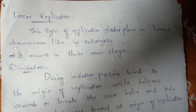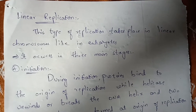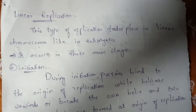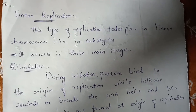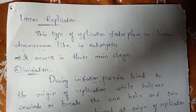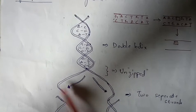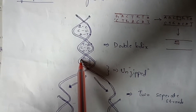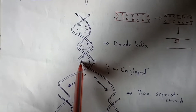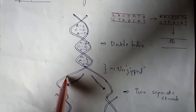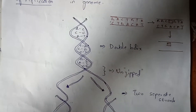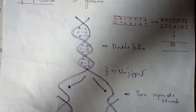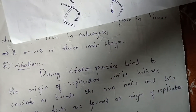Linear replication takes place only in linear chromosomes and mainly consists of three steps: initiation, elongation, and termination. In initiation, the double-stranded DNA, also known as mother DNA, gets separated into two single strands, known as daughter strands, with the help of a phenomenon known as DNA replication.